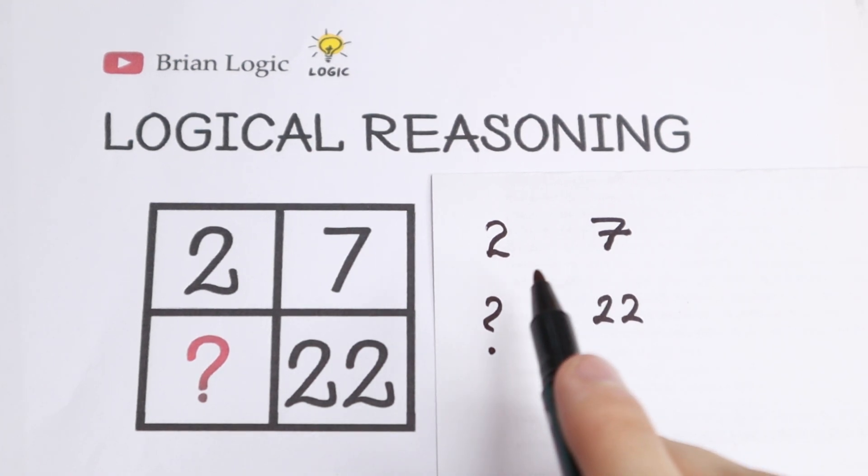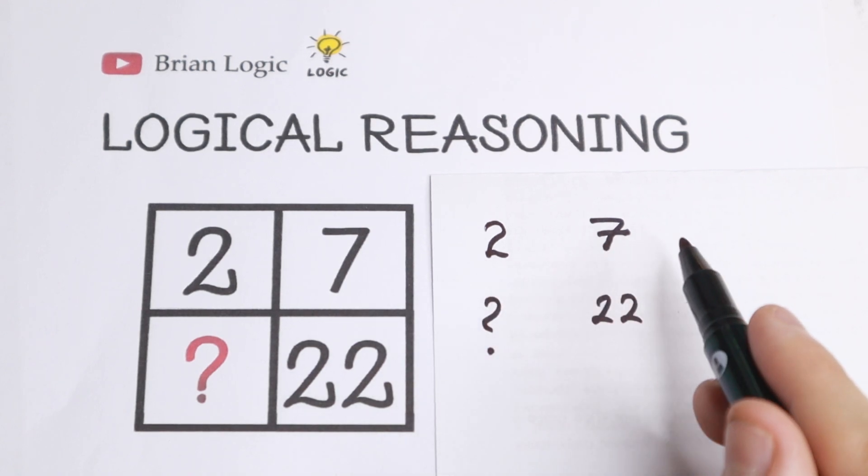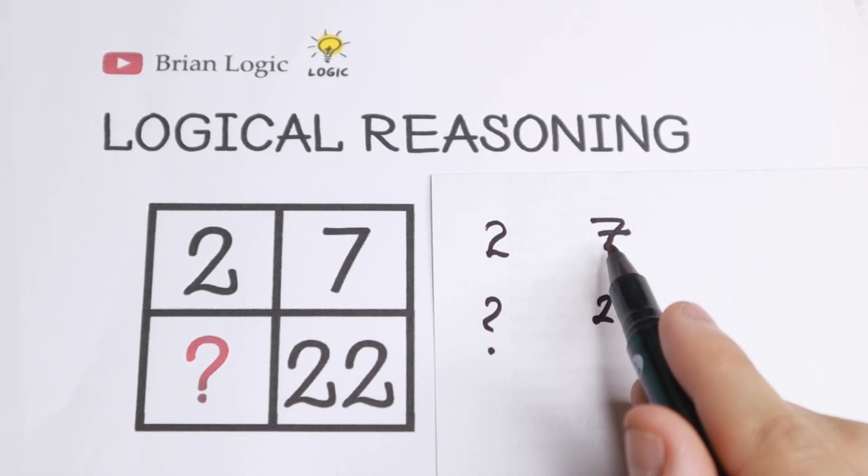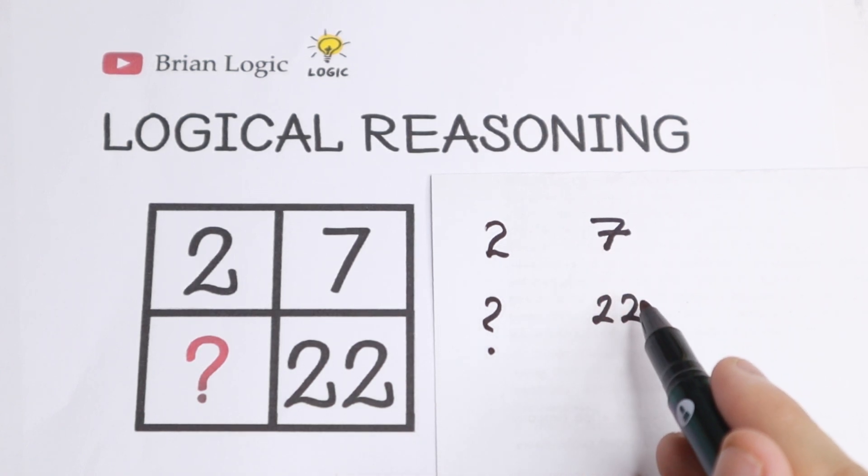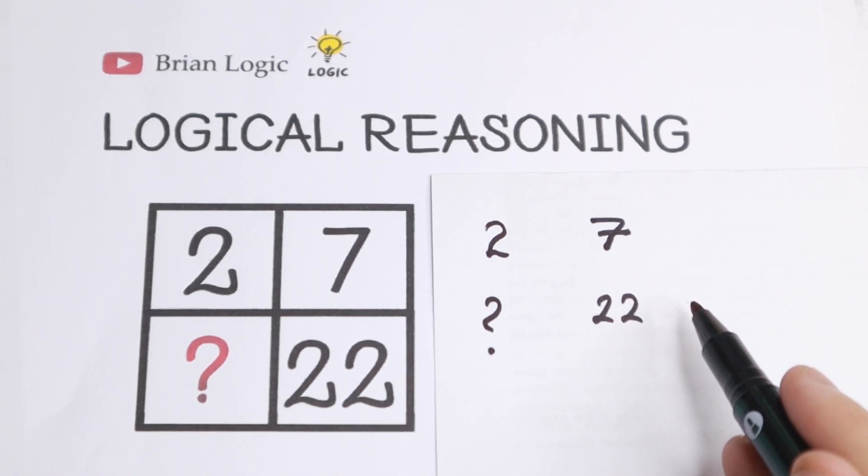What is the common pattern between 2, 7 and 22? Let's start with this first number. We have 2 and 7. What is the pattern between this number? This is even number, this is odd number. So there is no pattern between even and odd number. Right here between 7 and 22, this is odd, this is even number. So there is no pattern between even and odd number.